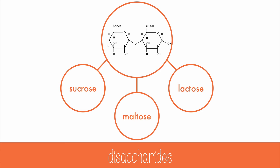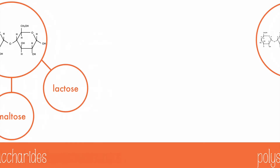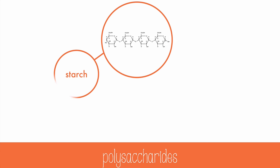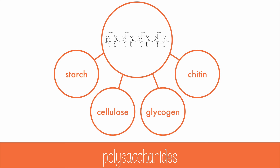If three or more monosaccharides are combined, we get a polysaccharide. The polysaccharides include starch, cellulose, glycogen, and chitin. Starch can be found in foods like potatoes and corn. Cellulose is the main component of cell walls of plants, and humans can't digest it. Because of this, we also call cellulose fiber or roughage because it passes right through our digestive system. Glycogen is the polysaccharide stored in the liver and muscles for energy, and chitin is the polysaccharide that makes up the exoskeletons of animals like crabs and insects.